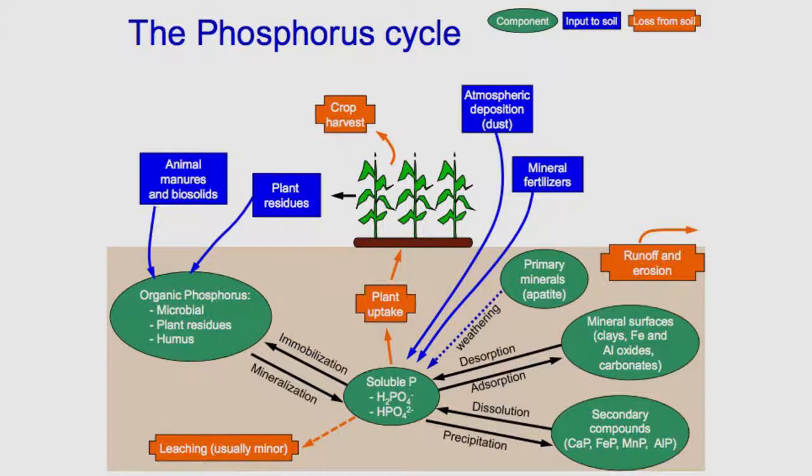However, excessive amounts of nutrients, particularly phosphorus and nitrogen, are detrimental to aquatic ecosystems. Waters are enriched in phosphorus from farm runoff and from effluent that is inadequately treated before it is discharged to waters.